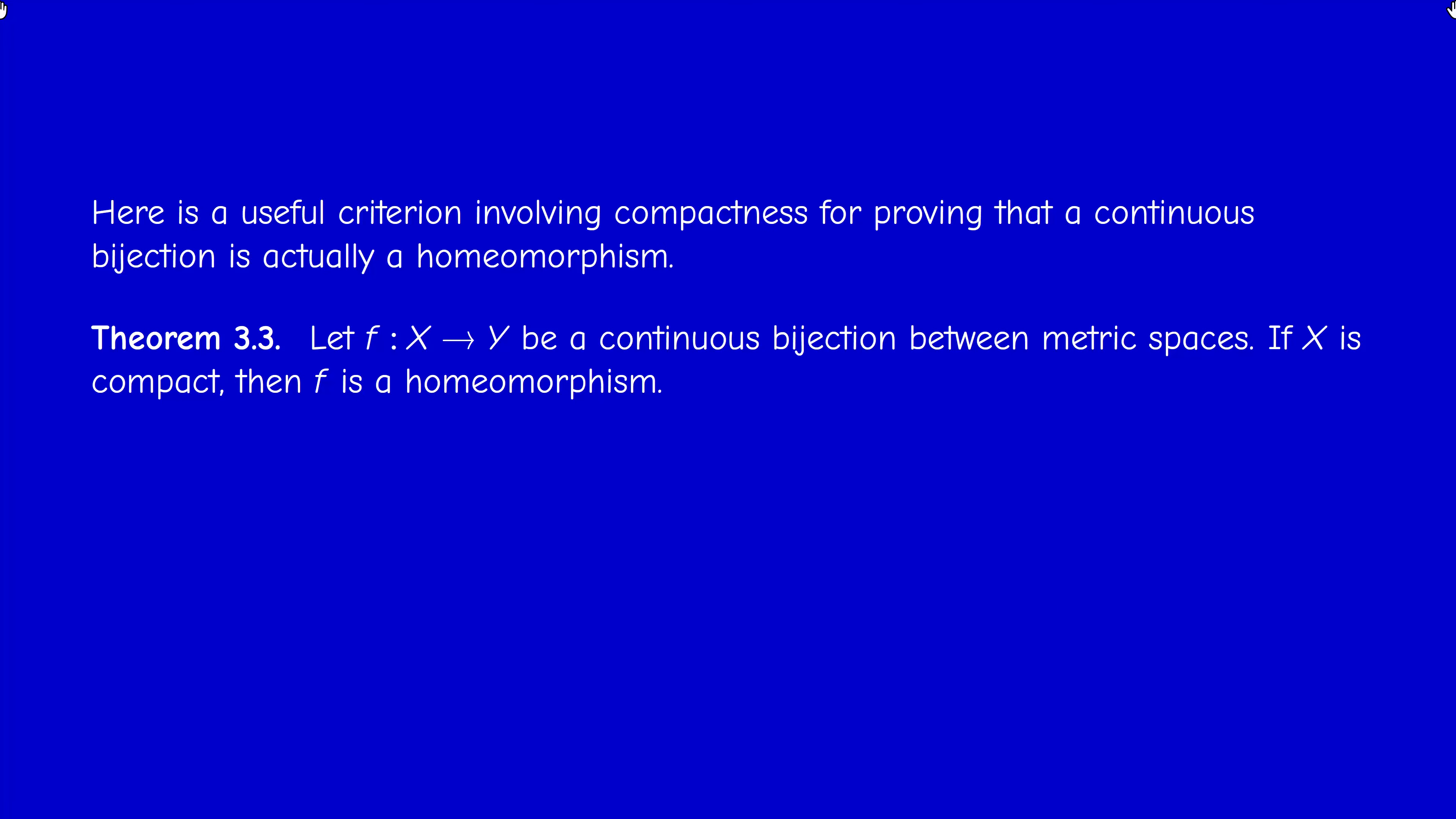And that's the result of this video. This is a criterion permitting to, so it's a case, it illustrates a case where continuity of the inverse is automatic. So if you have a continuous bijection between metric spaces and if X is compact, then f is a homeomorphism, which means that f^{-1} is automatically continuous.